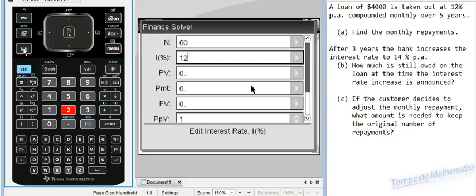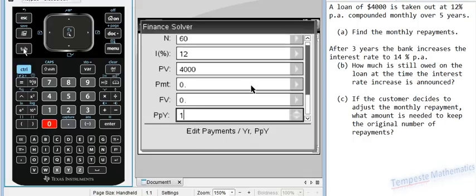The percent is 12. Present value, 4,000. Payment, we don't know, I'll come back to it. Future value, 0. Ppy, 12. CPY is 12 as well.